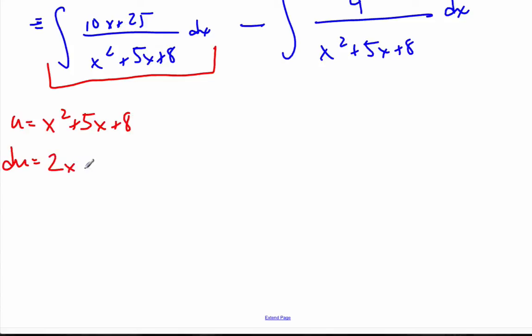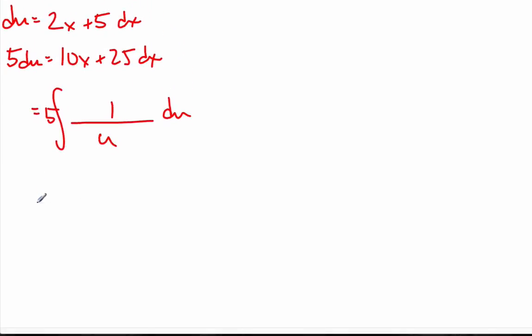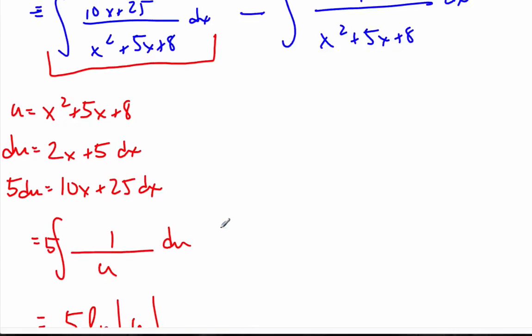So, du then is 2x plus 5 dx. That does not look like this yet. I have to multiply by 5. And so, it's 10x plus 25 dx. Now, I can substitute it in. The 5 is a coefficient. I'll pull out front. And this will be 1 over u du. Integrating that part simply becomes equal to 5 ln u, which is 5 substitute my u back, x squared plus the 5x plus 8. That's the one-half of my integral that I'm doing.